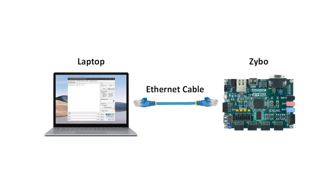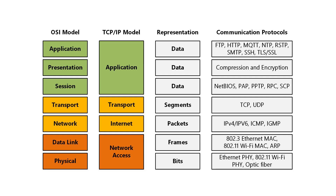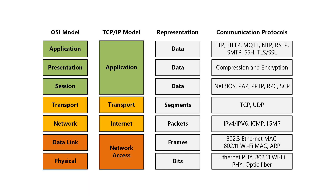Before we move on to the practical experiment, we need to take a deeper dive into the theory. How does this system work under the hood? In order to understand that, you need to know what the OSI and TCP/IP models are. They are conceptual frameworks used to understand and describe how communication occurs within computer networks. The OSI model has seven layers, from the physical to the application layer, and it corresponds to the four layers of the TCP/IP model.